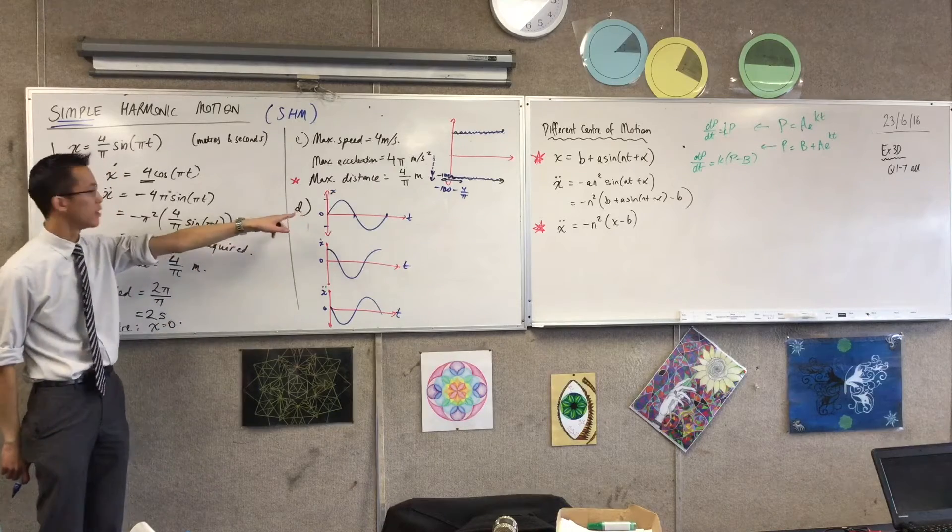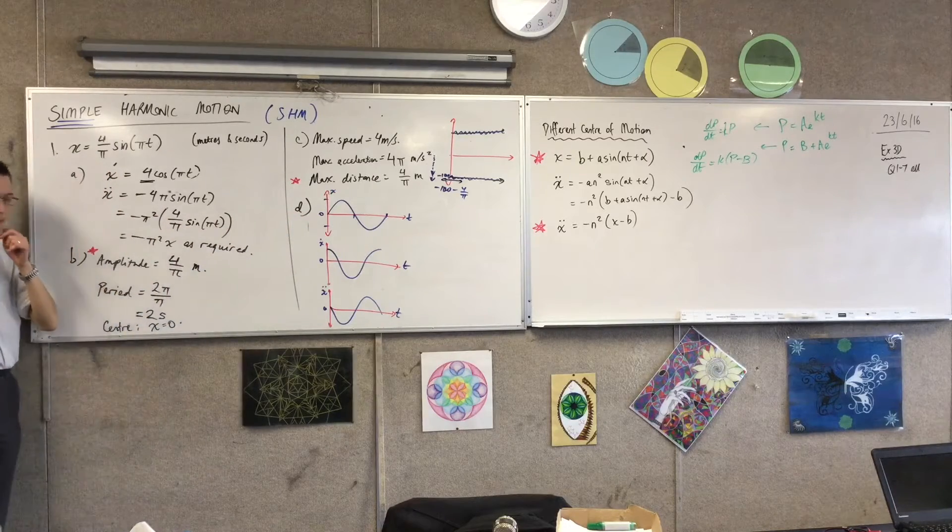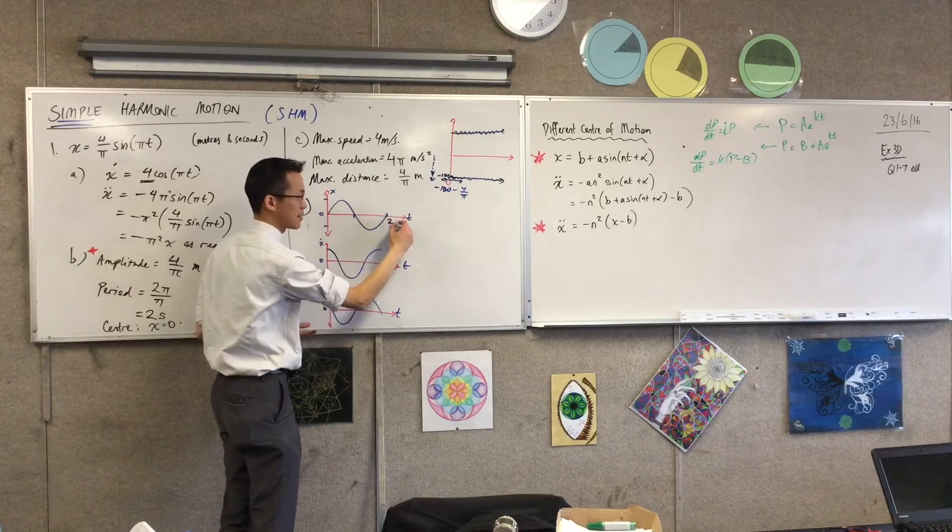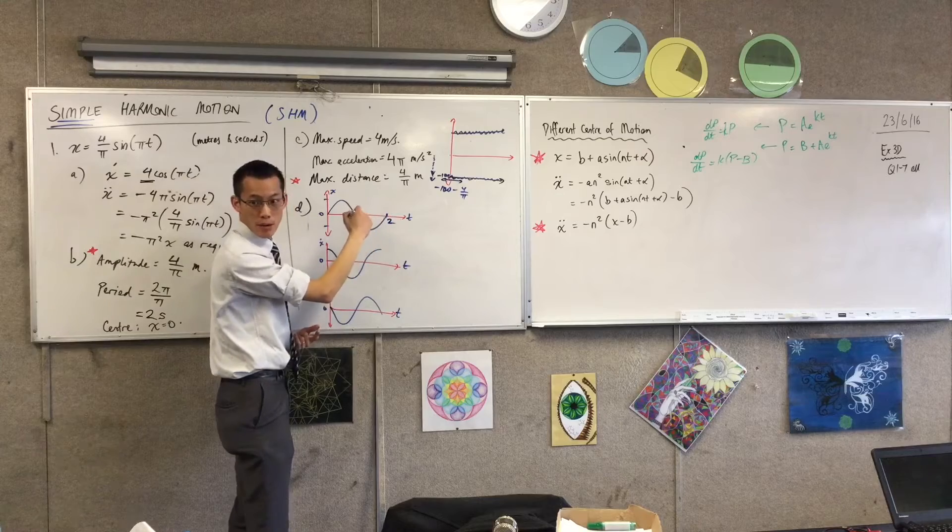What's the period? What's the period? We answered this before, right? It's two seconds. So that is all the way through to a whole cycle of motion. That makes that two, which makes this middle point one.